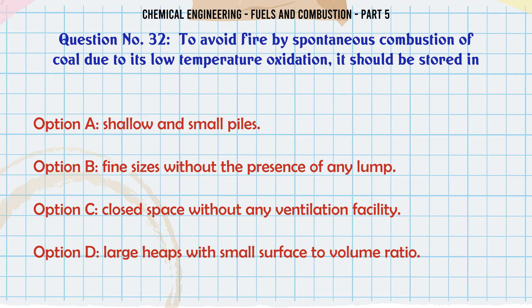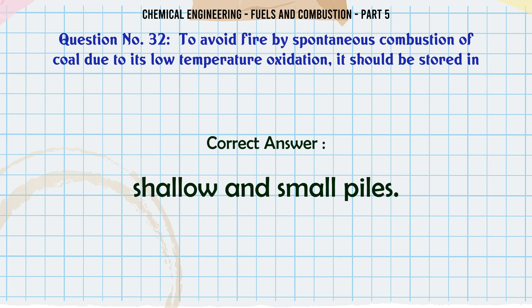To avoid fire by spontaneous combustion of coal due to its low temperature oxidation, it should be stored in: A. Shallow and small piles. B. Fine sizes without the presence of any lump. C. Closed space without any ventilation facility. D. Large heaps with small surface to volume ratio. The correct answer is shallow and small piles.